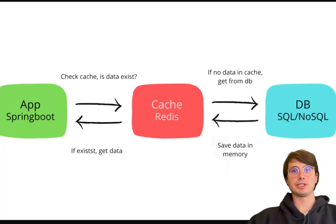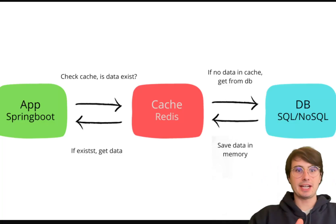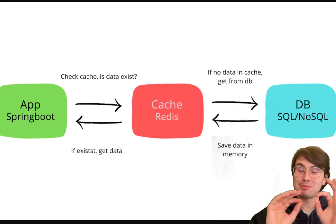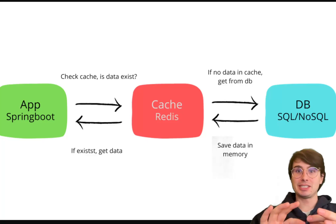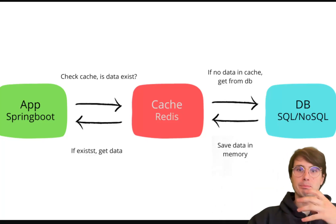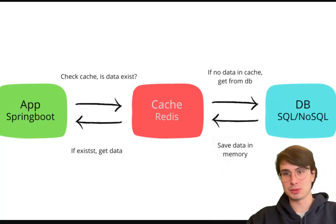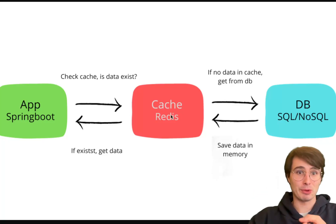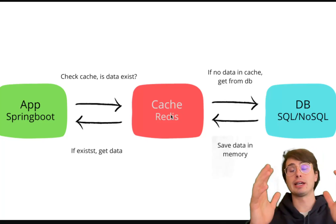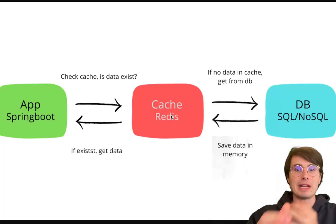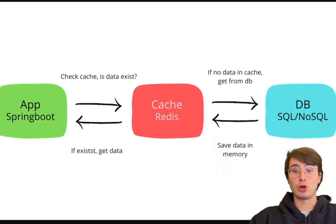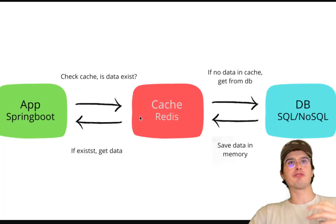Now moving on to Redis. Redis stands for Remote Dictionary Server — it's an in-memory key-value store classified as a NoSQL database, though some are nitpicky about that classification. I wanted to include it because it's very distinct from how MongoDB or Cassandra works but shares many NoSQL properties. It supports a wide variety of data structures: strings, lists, sets, sorted lists, and hashes. It's designed for ultra-fast, low-latency operations where you need to constantly and quickly access a smaller portion of your overall data.